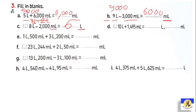Letter d: 10 liters and 1495 mL. First convert to mL: 10 liters = 10,000 mL. Then 10,000 + 1000 = 11,000, so answer is 11 liters and 495 mL. Letter e: 1 liter 500 mL plus 3 liters 200 mL. Convert: 1500 + 3200. Zero + zero = zero, 2 + 5 = 7, 3 + 1 = 4. Answer is 4700 mL.